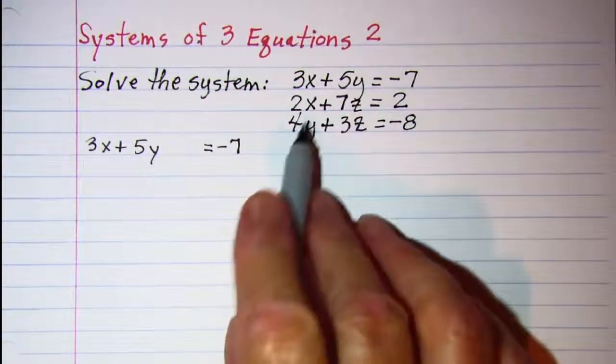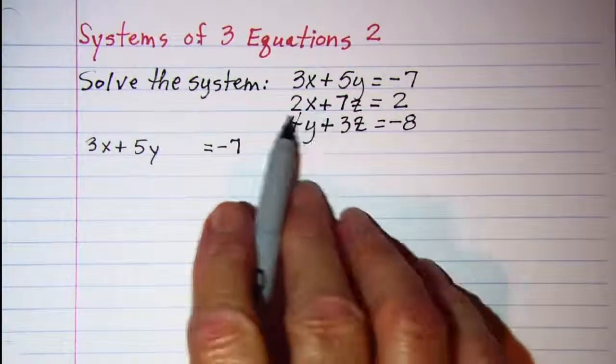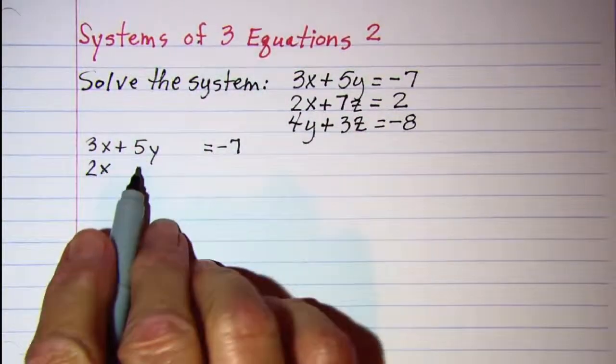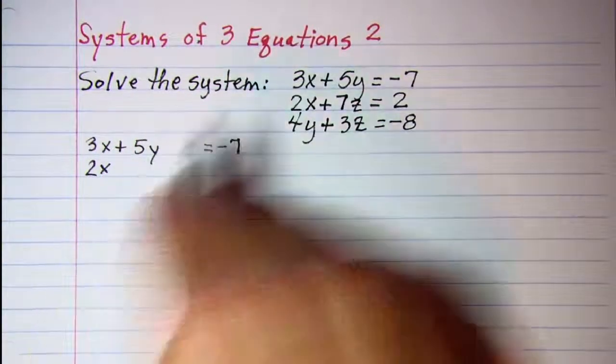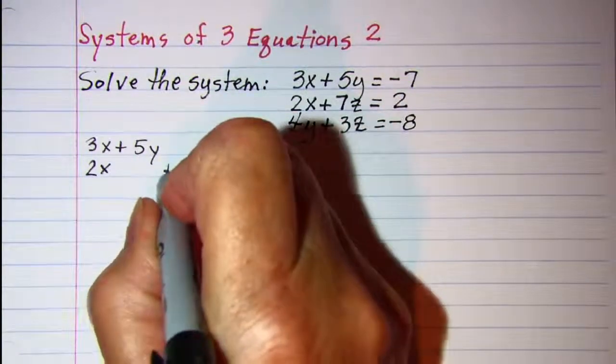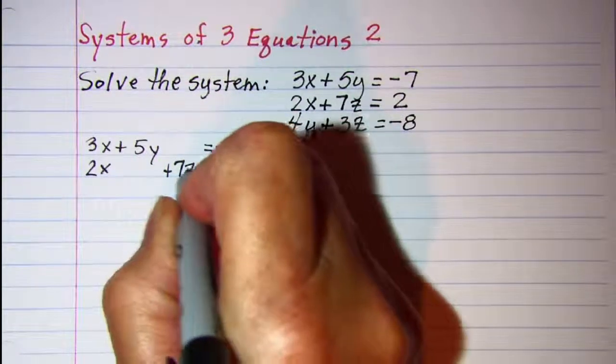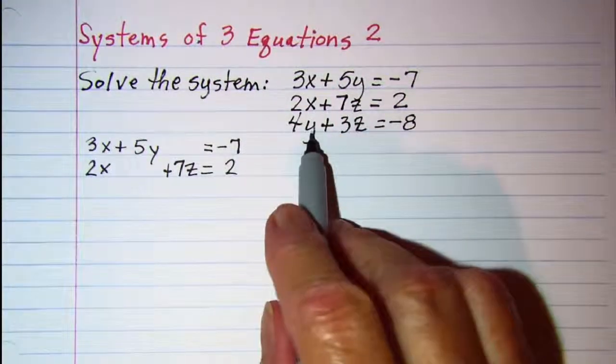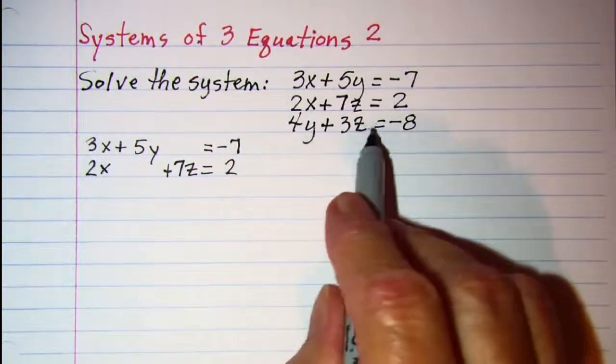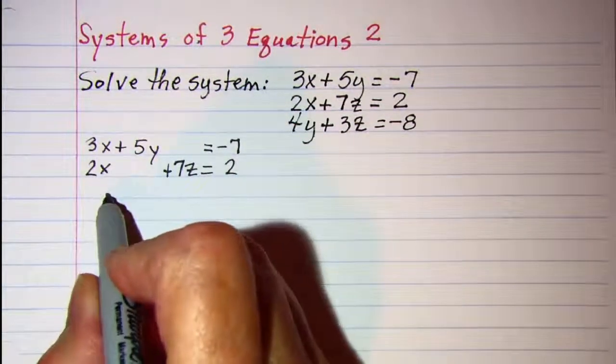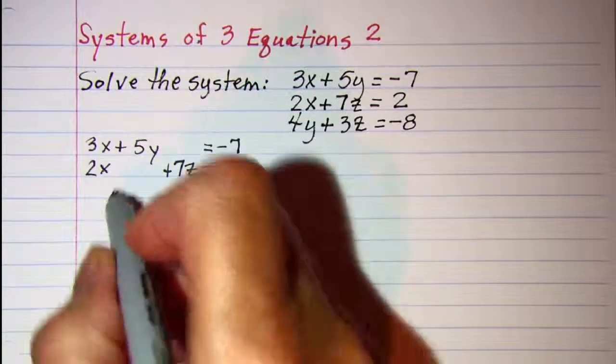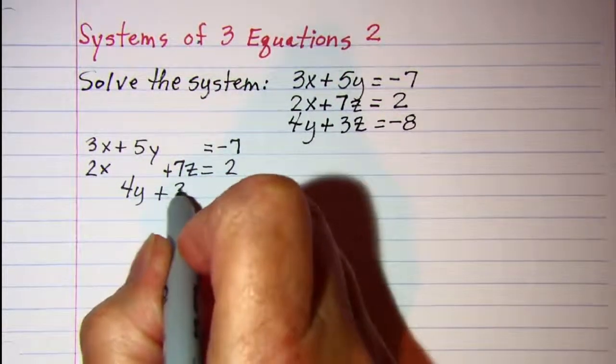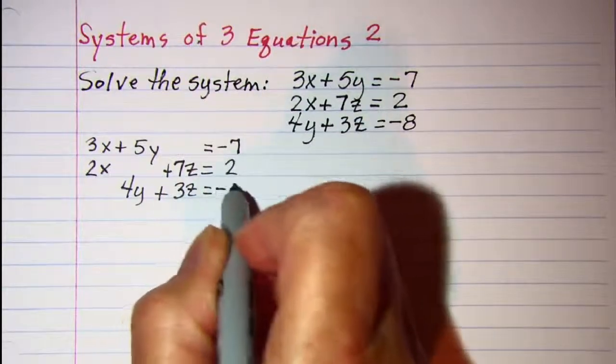Our second equation is missing the y, so I'll have 2x, leave a space for y, and 7z = 2. Our third equation is missing the x, so I'll leave a space in the x column and add 4y + 3z = -8.